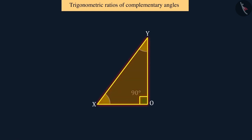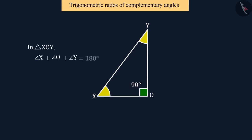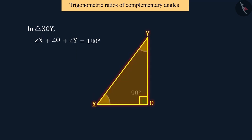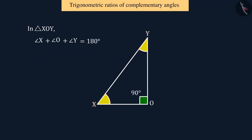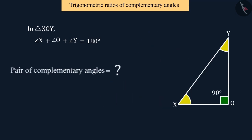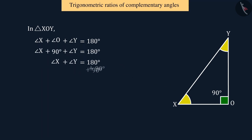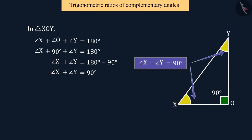Let us now discuss the right-angled triangle XOY. We know that the sum of the three angles of a triangle is 180 degrees. In the triangle XOY, angle O is a right angle and both the remaining angles X and Y are acute angles. So, can you look at the diagram and guess whether there are any pairs of complementary angles here? Here, angle X and angle Y form a pair of complementary angles. That is, we can say that the value of angle X plus angle Y will be 90 degrees.